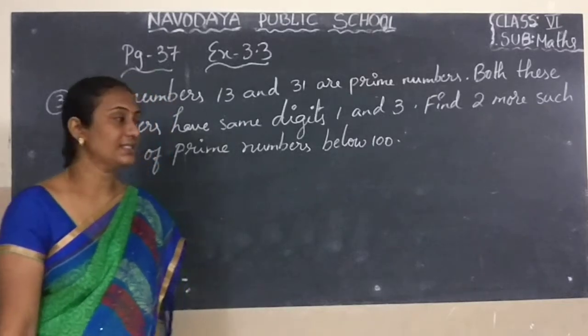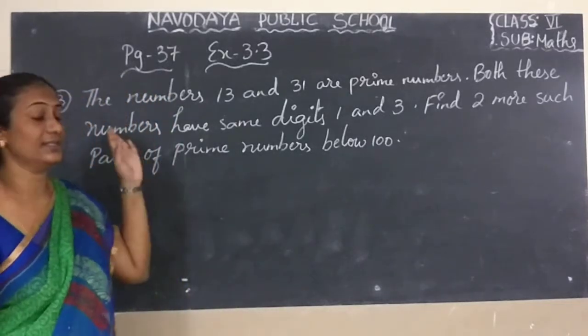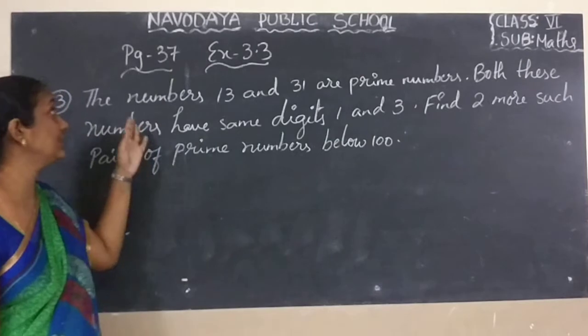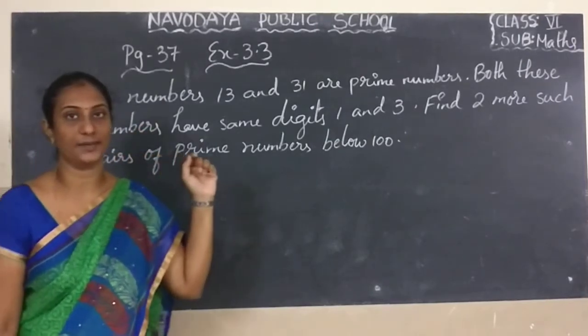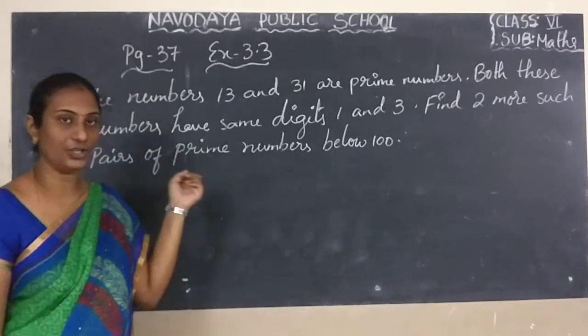Children, in the last class we have seen Exercise 3.3, page number 37, one and two sums. Now we will see the third question.